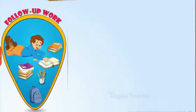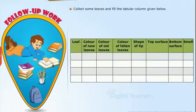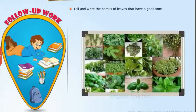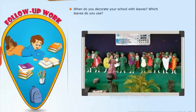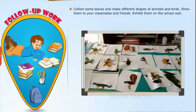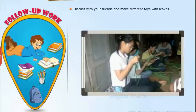Follow-up work — take up the following activities. Collect some leaves and touch their surface. How do you feel? Are they soft or rough? Observe and write them in the table. Collect some leaves and fill the tabular column given below. Tell and write the names of leaves that have a good smell. Name the dishes in which we can use the given leaves. When do you decorate your school with leaves? Which leaves do you use? Collect some leaves and make different shapes of animals and birds. Show them to your classmates and friends. Exhibit them on the school wall. Discuss with your friends and make different toys with leaves.